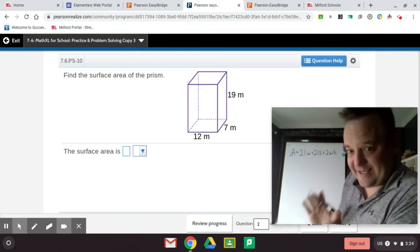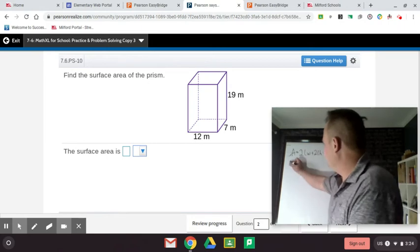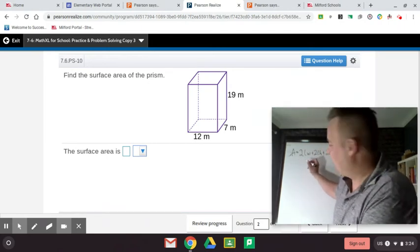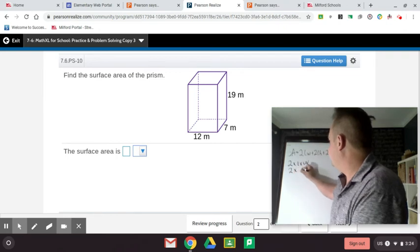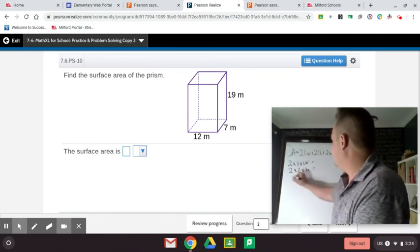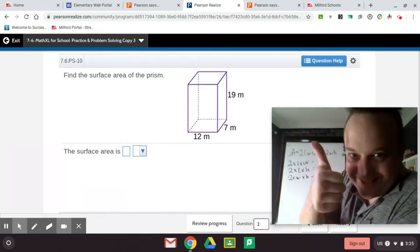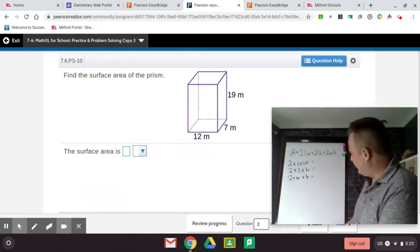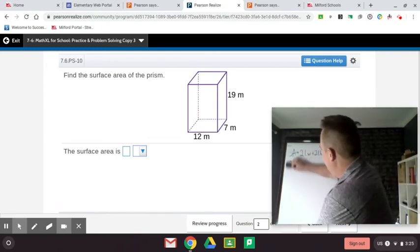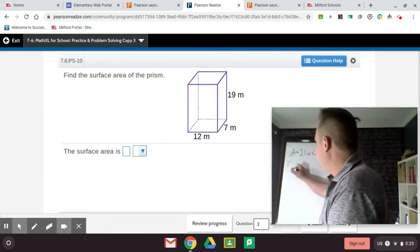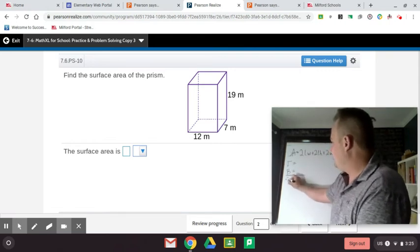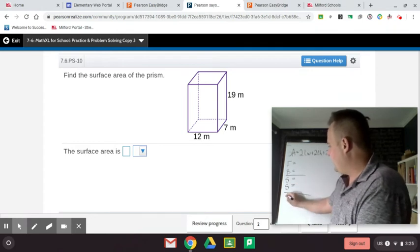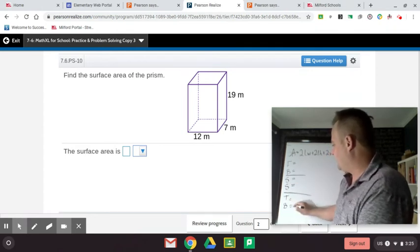I think the easiest method is to go, so if this is intimidating, which I see how it could be for some of you, you could go two times the length times the width equals, and then two times the length times the height equals, and then two times the width times the height equals. That's another way a lot of my students, shout out to my students out there, like to do that way. And then I think the basic way, which is still a good way, is to do this: the front face and the back face are the same, and then the two side faces are the same, and then the top and the bottom, those are the same.